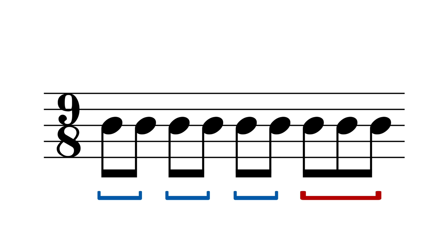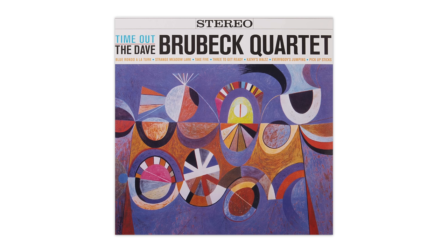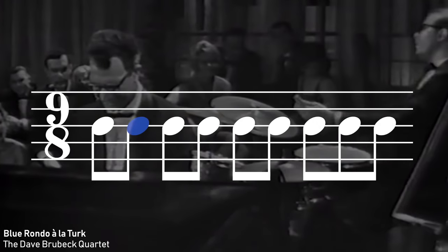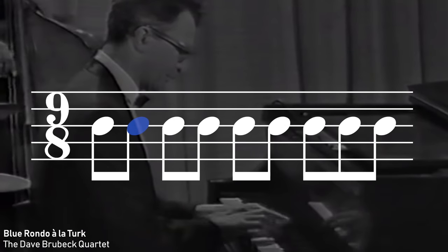And this is exactly what Dave Brubeck did. After his exposure to these odd rhythms during his tour of Turkey and the Balkans, he and his quartet wrote the iconic Time Out, an album where each track explores a different unusual or odd meter. And opening this iconic album is Blue Rondo a la Turk. This track directly contrasts the Western and Balkan way to play a 9-8 meter by switching regularly between the Turkish 2-2-2-3 rhythm and the Western 3-3-3 rhythm.